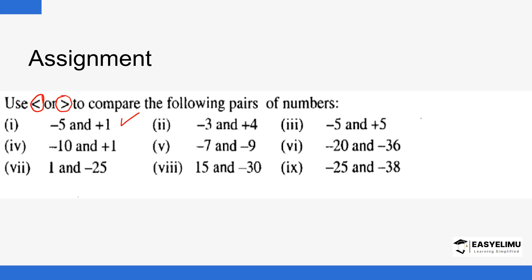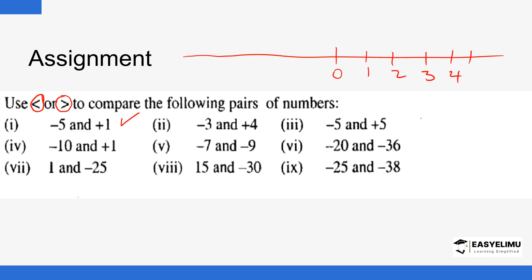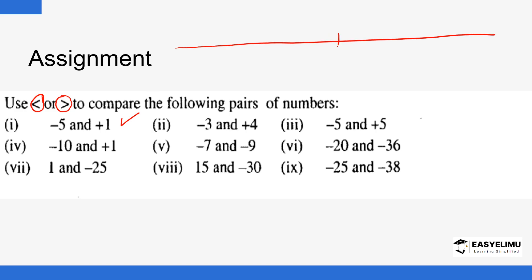You can use a number line to help you. So we draw the number line: zero, one, two, three, four and this continues. Then on the left side: negative one, negative two, negative three, negative four, negative five. The first pair is negative five and positive one.